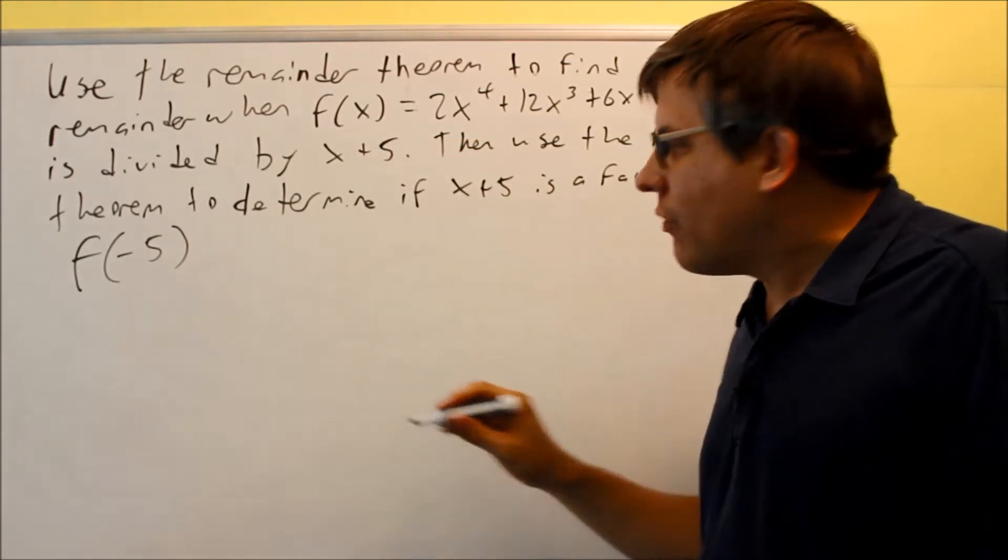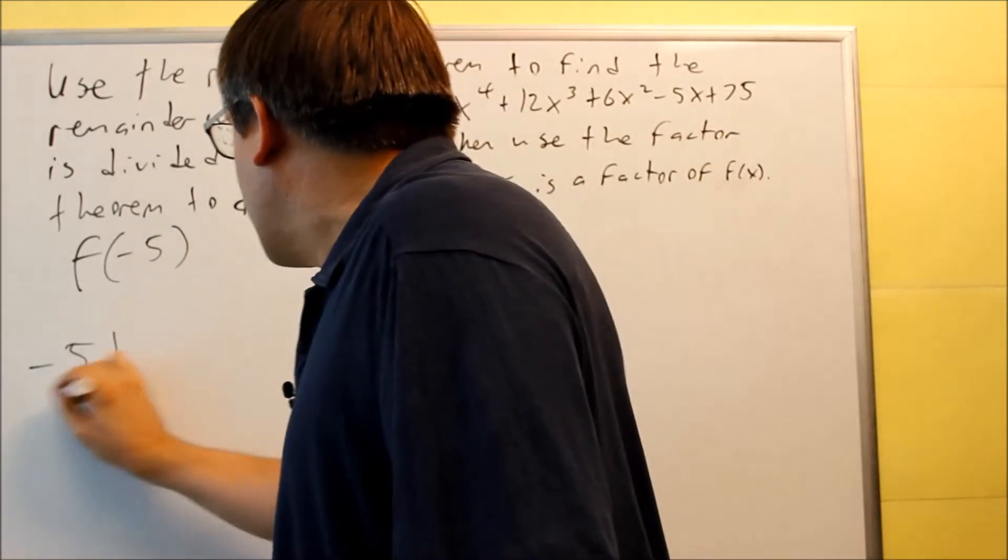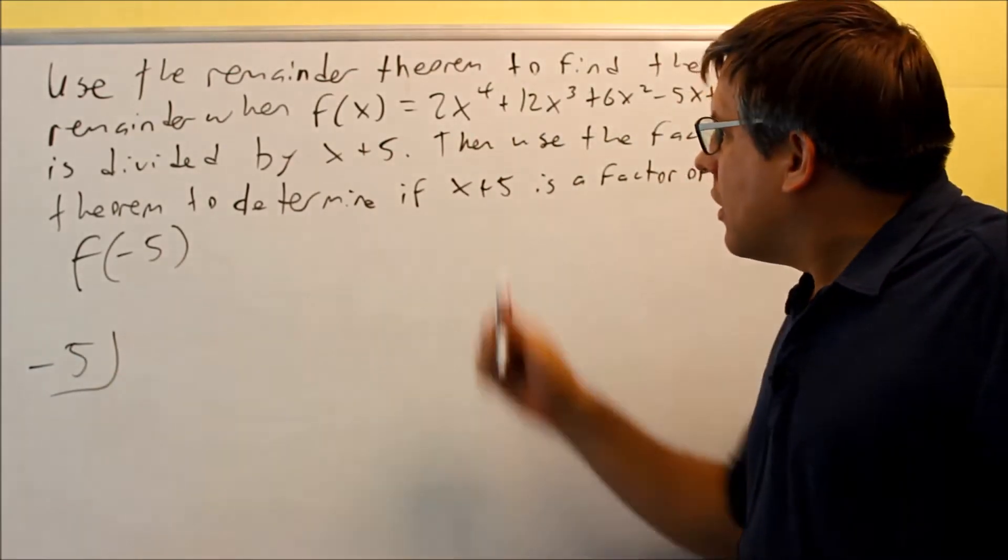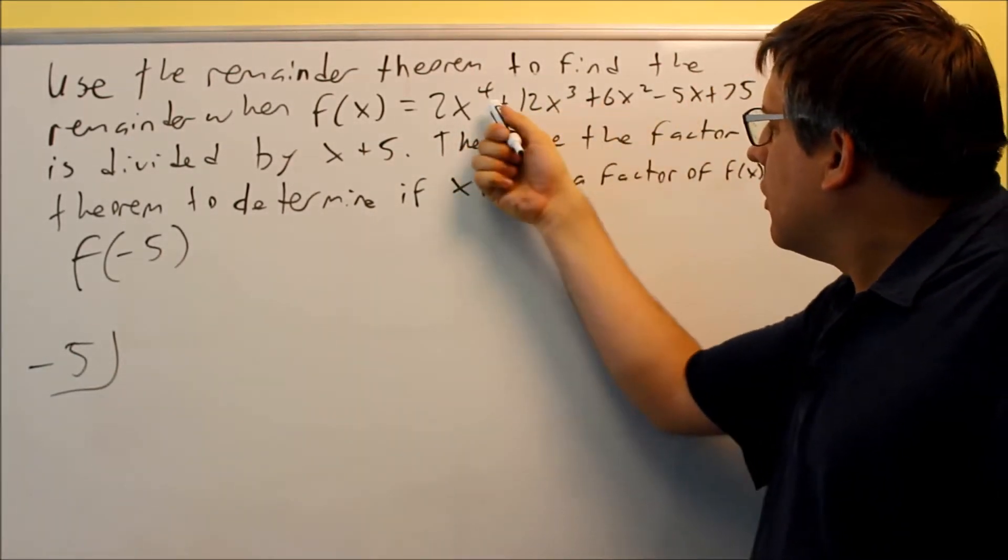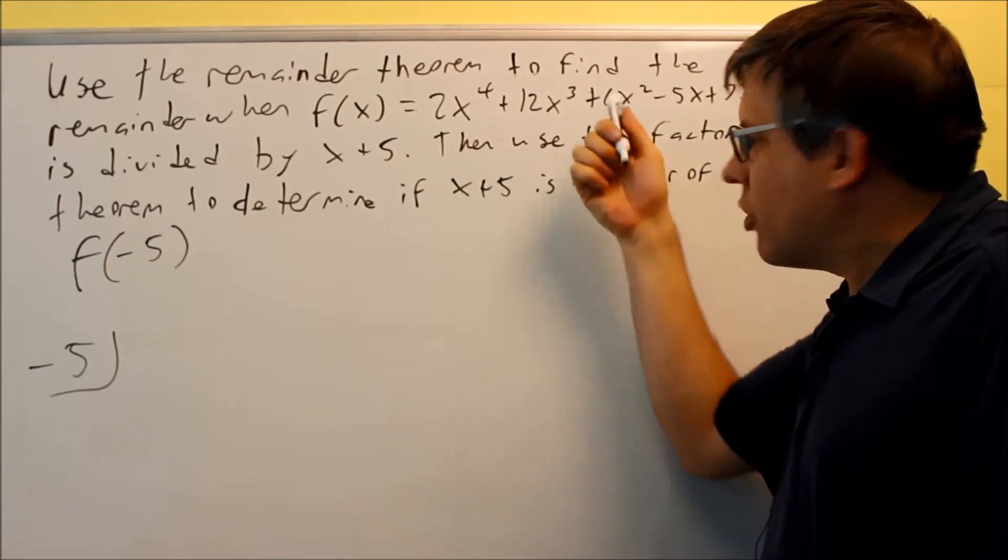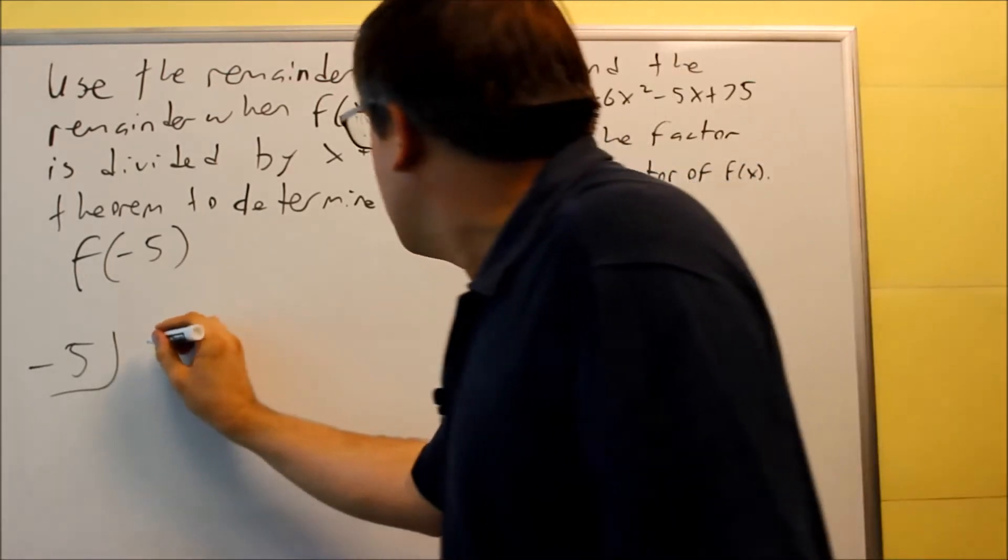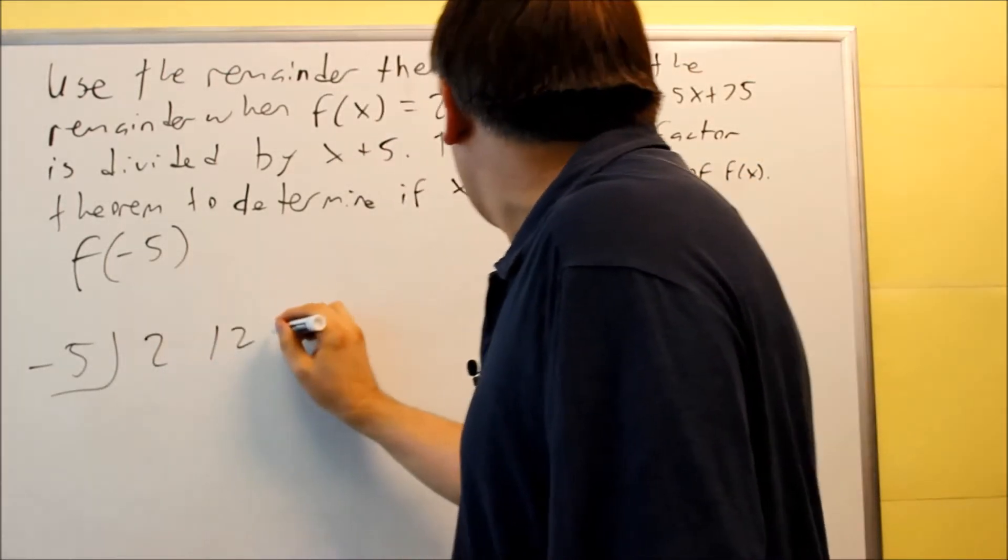So let's do synthetic division with that first. We're going to do negative 5, goes down here in the box. This is written highest to lowest power. There's nothing missing, no terms missing there. So that means I can go ahead and put these coefficients in as is.